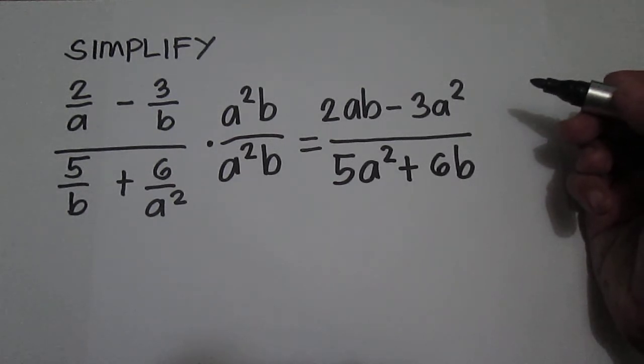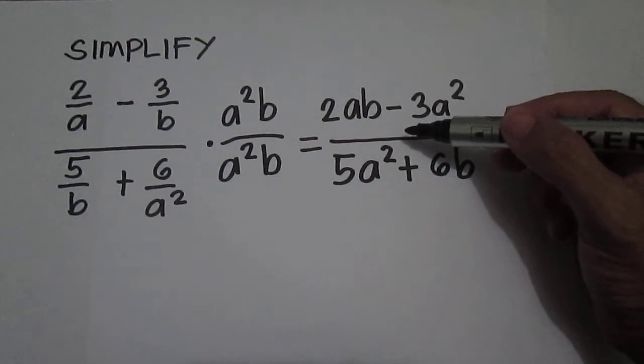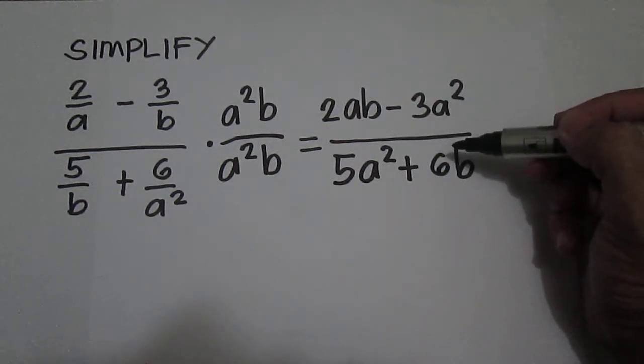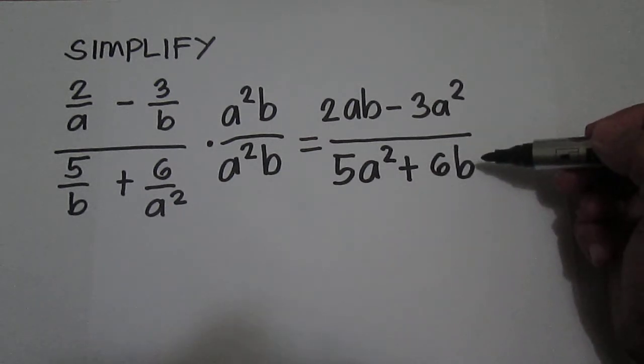So the answer is 2ab minus 3a squared all over 5a squared plus 6b.